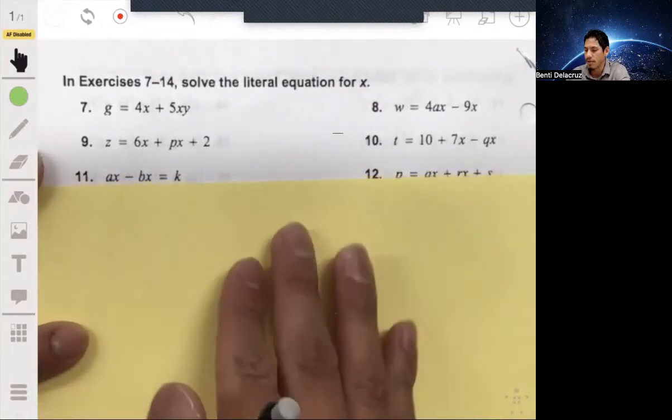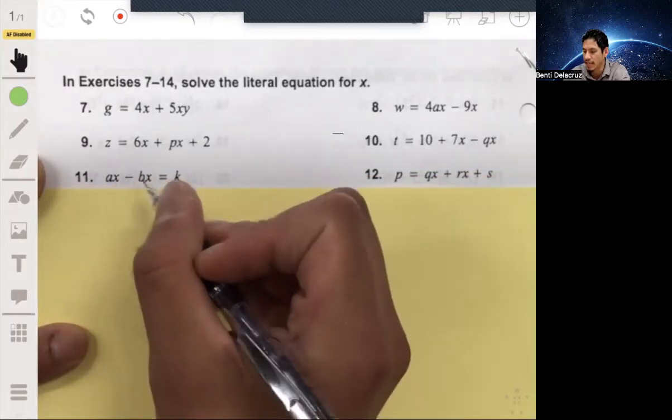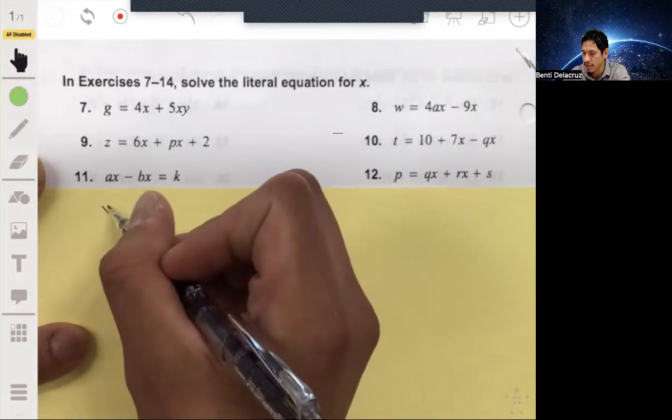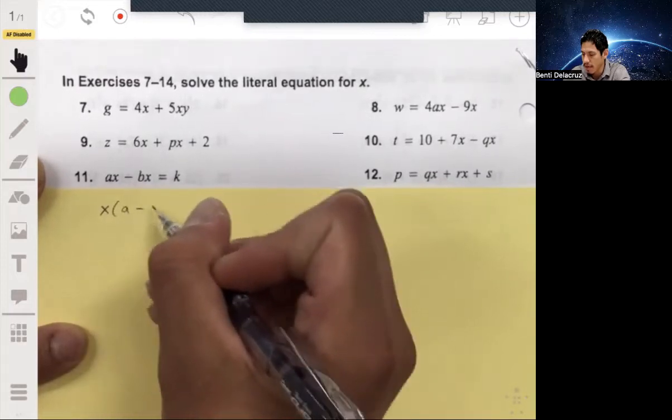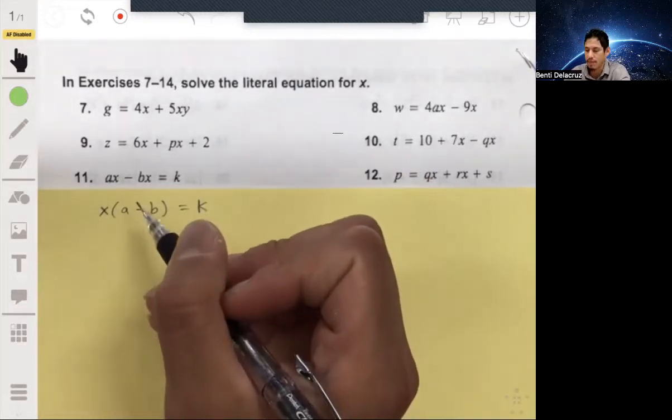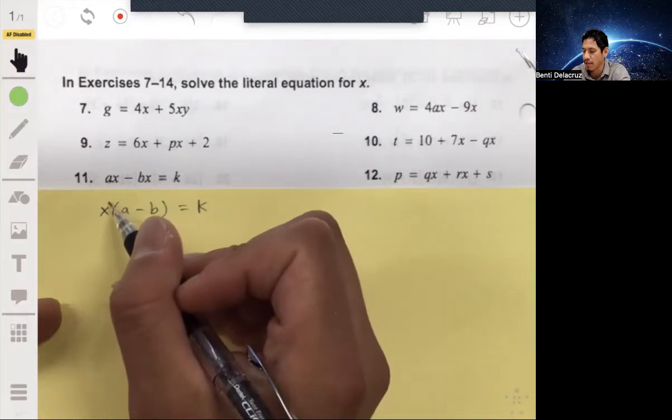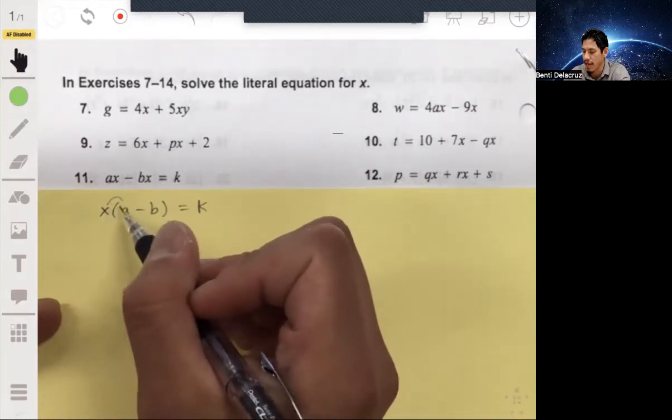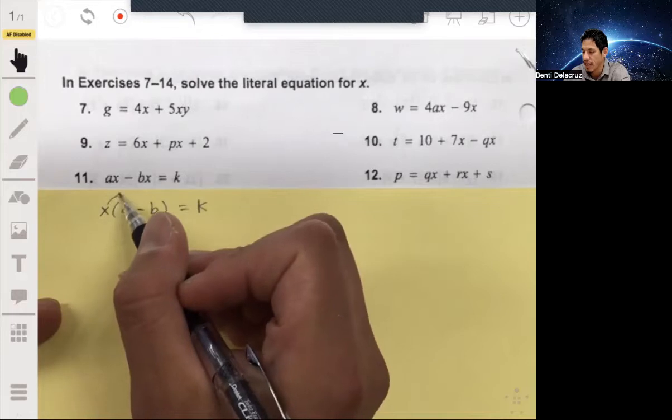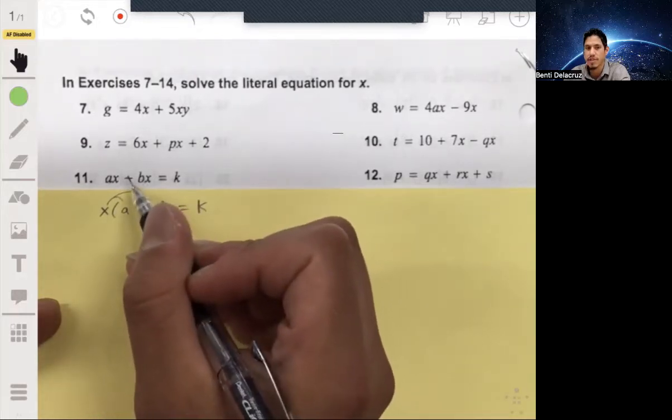what we can start off doing is you can factor out X from the AX and the BX. So you can get an X times an A minus B is equal to K. Think of this as like backwards distribution or like reverse distribution. It's called factoring. But if you were to distribute that X to that A, you would get AX. And if you were to distribute that X to that minus B, you would get minus BX. So you would go back to here.